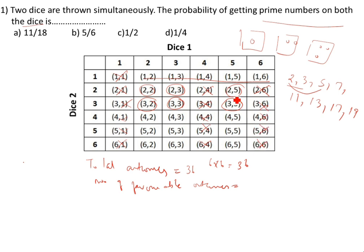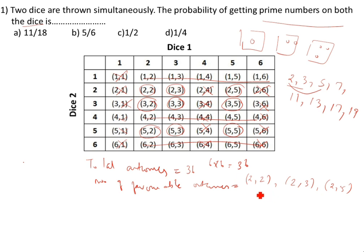4 is not prime so strike out the whole row for 4. 6 is not prime so strike out that whole row too. For 5: 5,2 — yes, 2 is prime; 5,3 — yes; 5,5 — yes. So the favorable outcomes are: 2,2  2,3  2,5  3,2  3,3  3,5  5,2  5,3  5,5. That gives us 9 favorable outcomes.